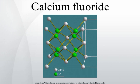Calcium fluoride is the inorganic compound with the formula CaF2. It is a colorless insoluble solid. It occurs as the mineral fluorite, which is often deeply colored owing to impurities.